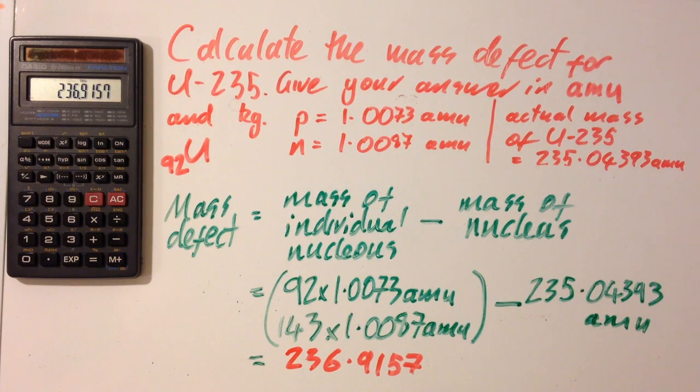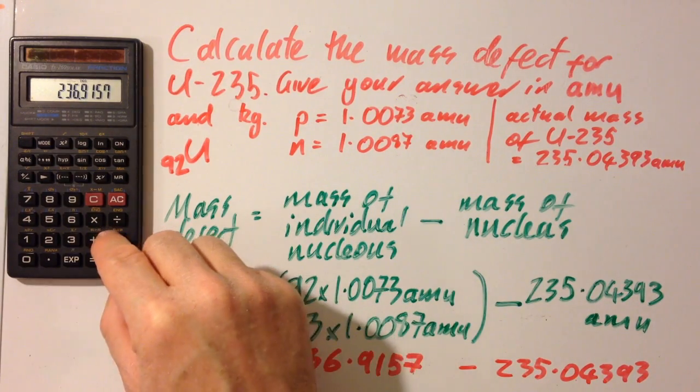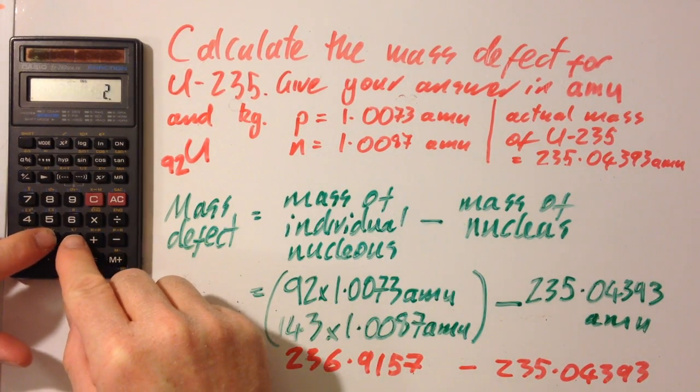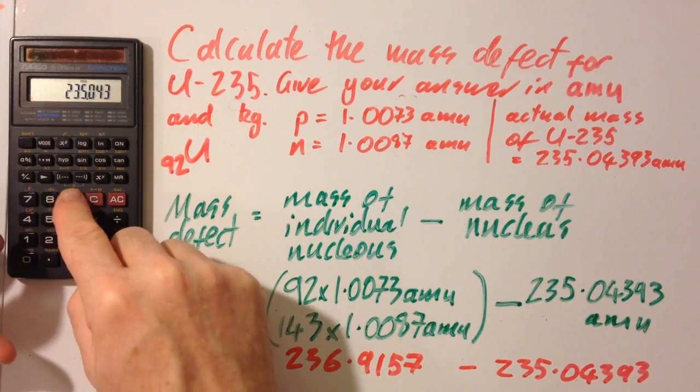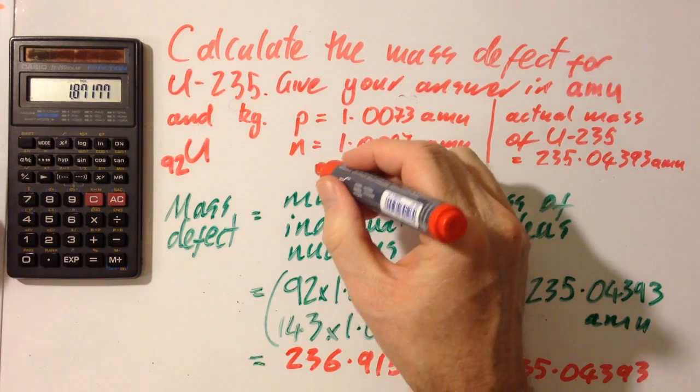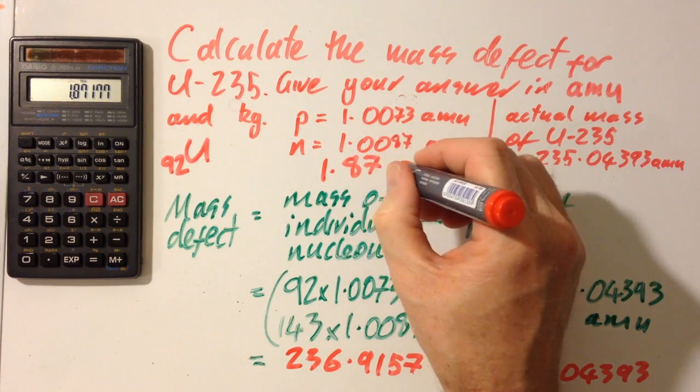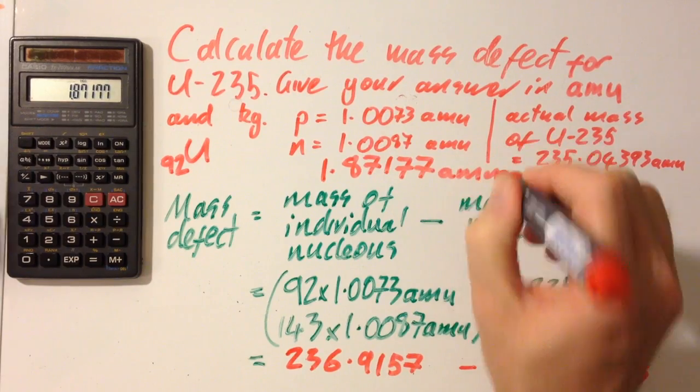236.9157, minus the 235.04393 AMU. And I think I'm going to run out of space. 236.04393 AMU. And that gives me a final answer of 1.87177 AMU.